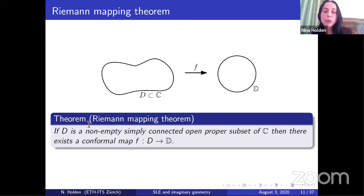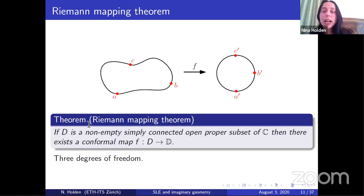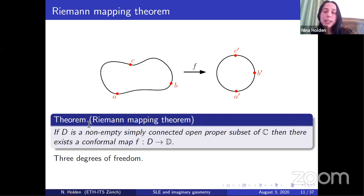The next goal will be to give a definition of SLE. But before doing that, I need to do quite a bit more complex analysis. I start by recalling the Riemann mapping theorem. The Riemann mapping theorem says that if D is some simply connected domain in the complex plane, which is not equal to the full complex plane and which is not empty, then there exists a conformal map from D to the unit disk. This conformal map is not unique. Roughly speaking, when we choose this conformal map, we have three degrees of freedom. For example, we can choose three points A, B, and C on the boundary of D and require that these are mapped to ±i and 1. The reason we have three degrees of freedom is that the space of conformal maps from the unit disk to itself can be parametrized by three real numbers.